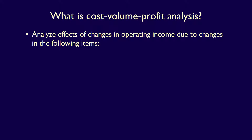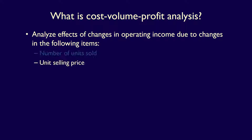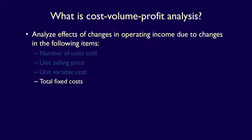These changes include such things as the number of units sold from period to period, the selling price being charged per unit to the customer, the variable cost per unit — such as the cost of materials or labor — the total amount of fixed costs, such as the monthly costs for rent or depreciation, and the sales mix.